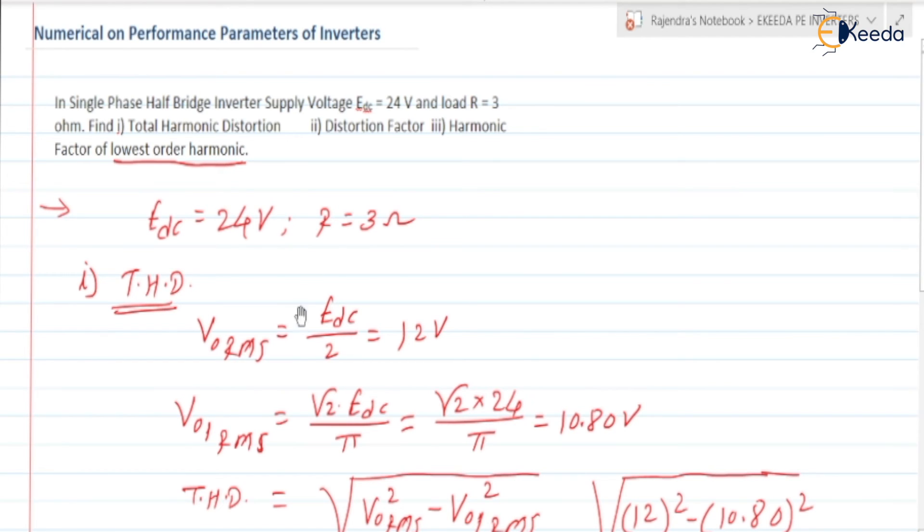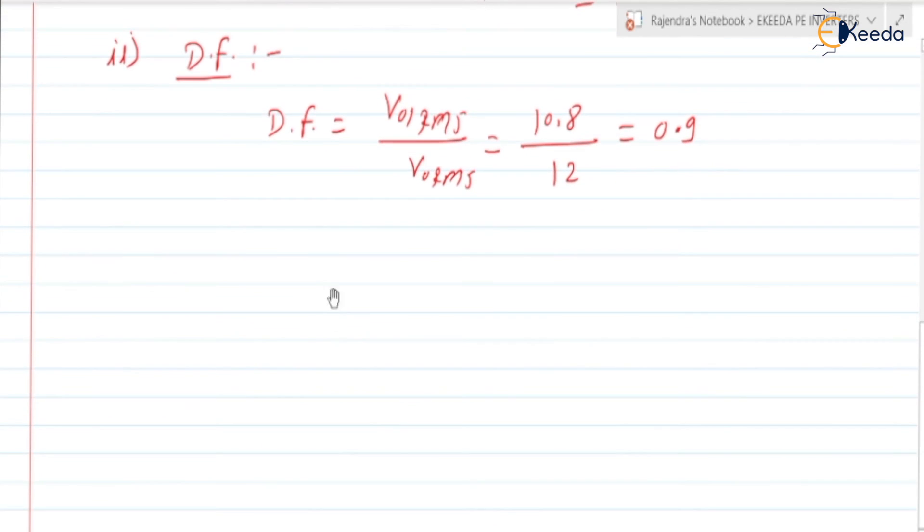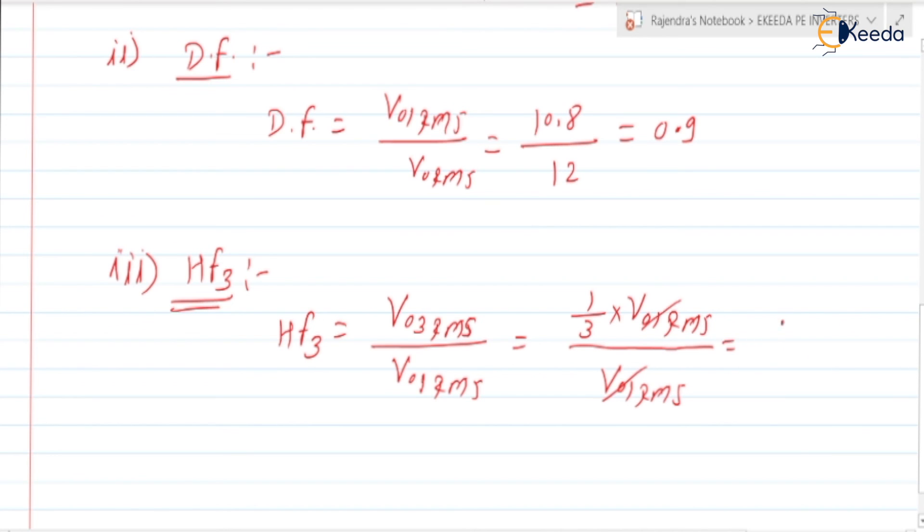Harmonic factor of lowest order harmonic. So here we need to find HF3. For the third bit, HF3, that is the harmonic factor of third harmonic. HF3 is equal to V03RMS divided by V01RMS. We know V03RMS is 1 by 3 into V01RMS. Or we can find its value also. Divided by V01RMS. Here V01RMS will get cancelled. So is equal to 1 by 3 is equal to 0.33. So it is like 33 percent.